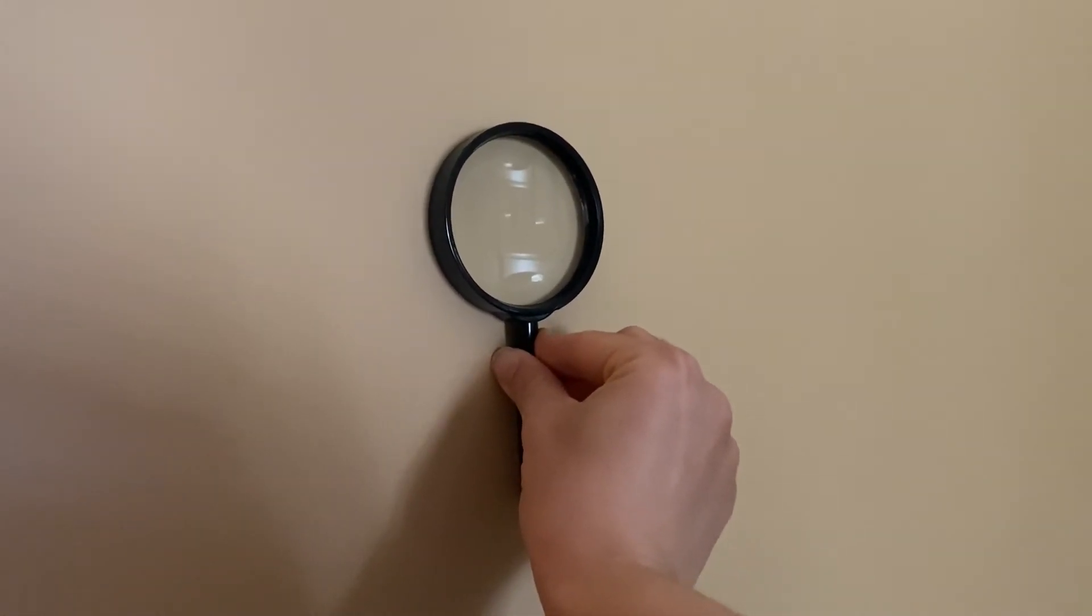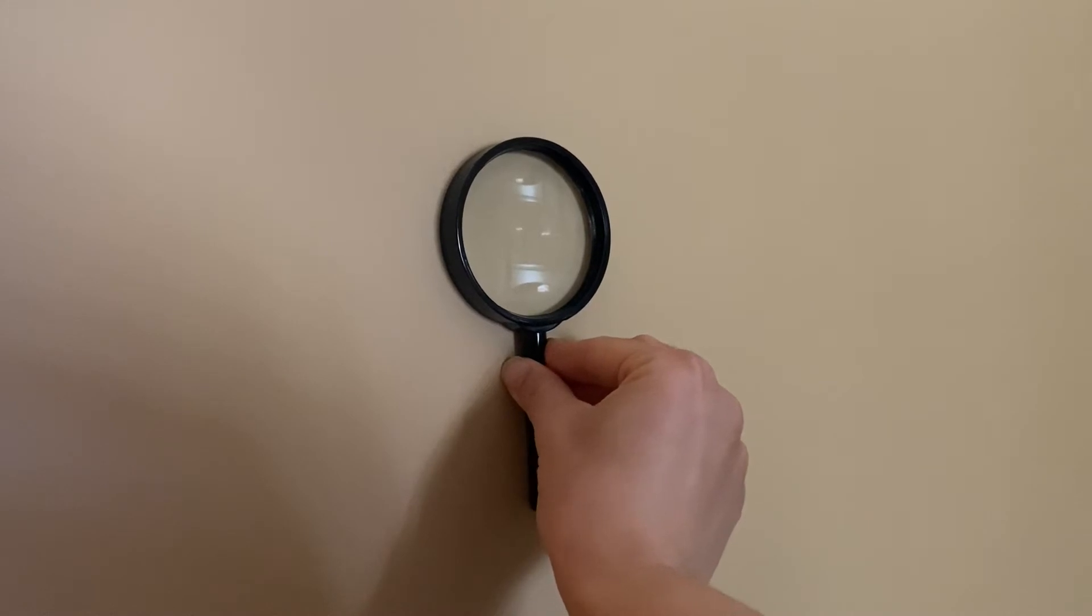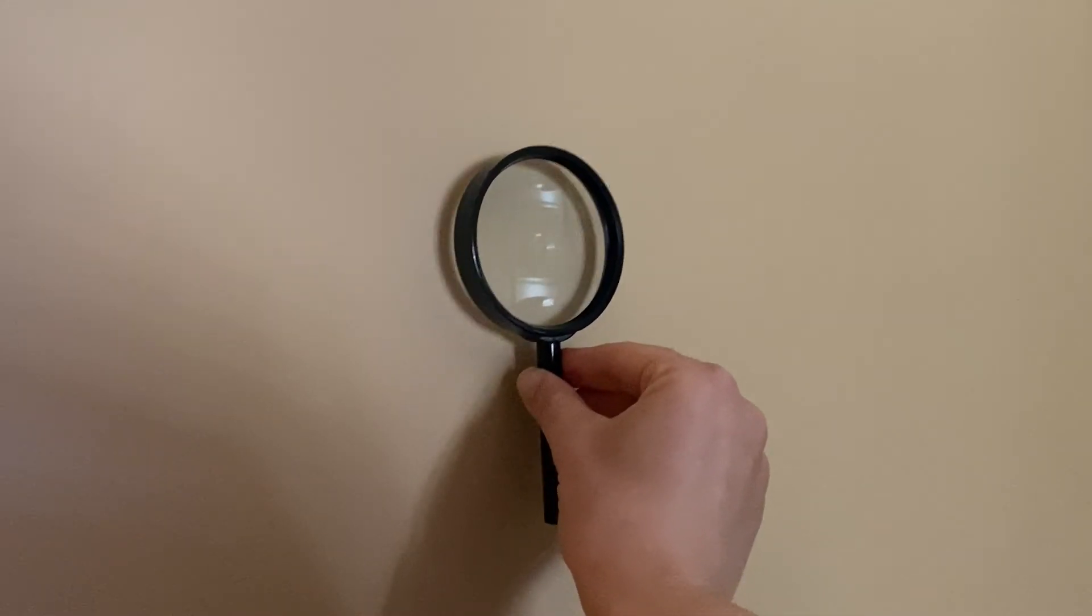Go ahead and start pulling the magnifying glass off the wall and go as far back as necessary to actually get an image of the outside world on your wall. You want to make sure that the outside is what's in focus, not the window frame itself.